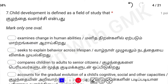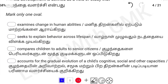Option 1: Examine changes in human abilities. Option 3: Seeks to explain behavior across the lifespan. Option 4: Accounts for the gradual evaluation of the child's cognitive, social, and other capacities. In child development, we talk about cognitive ability, social ability, moral development, and emotional development. So Option D is the correct answer.